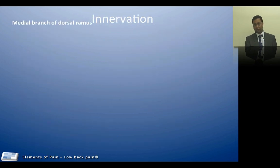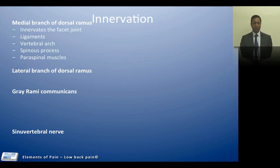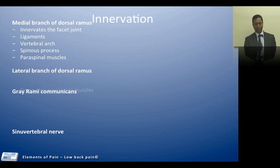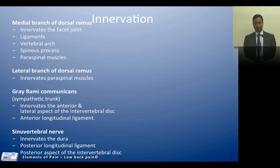We now look at the innervation of this functional unit. There are several branches that come from the nerve root: the medial branch of the dorsal ramus, the lateral branch of the dorsal ramus, gray rami communicantes, and sinovertebral nerves. The medial branch of the dorsal ramus innervates the facet joint, ligaments, vertebral arch, spinous processes, and paraspinal muscles. The lateral branch of the dorsal ramus innervates predominantly the paraspinal muscles. Gray rami communicantes supply the anterior and lateral aspects of the intervertebral disc and the anterior longitudinal ligament. The sinovertebral nerve innervates the posterior longitudinal ligament, dura, and the posterior aspect of the intervertebral disc.